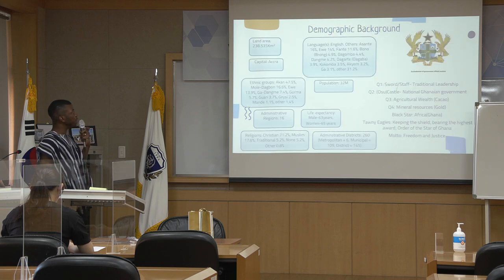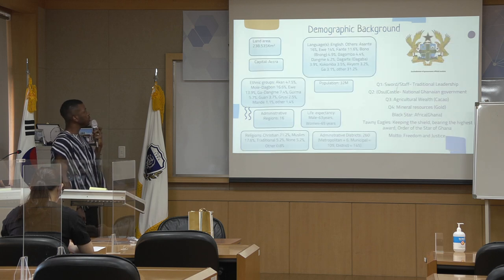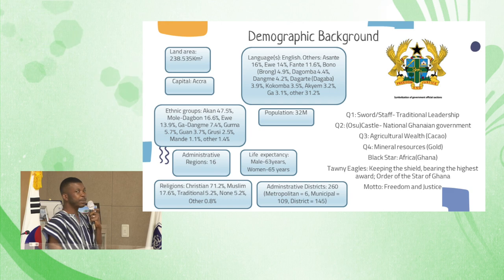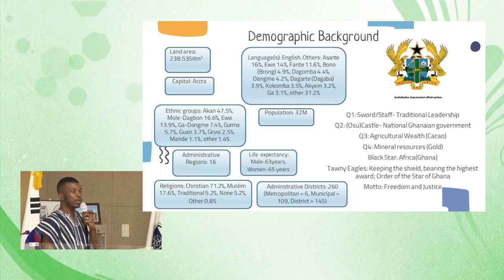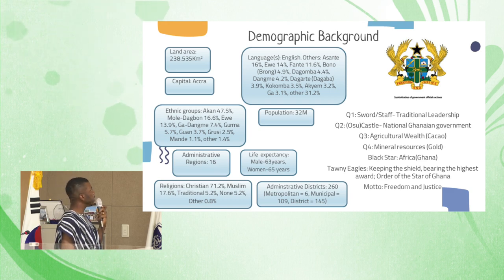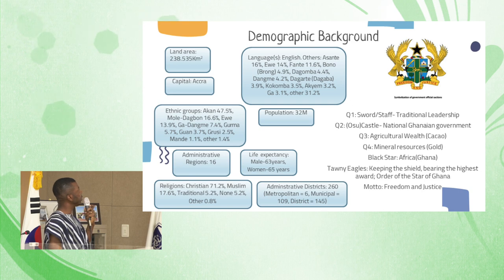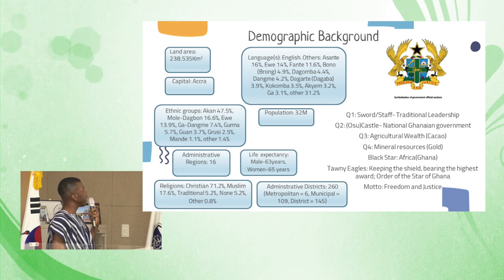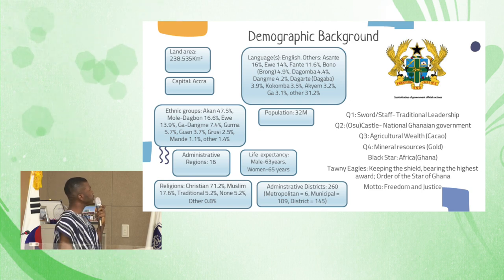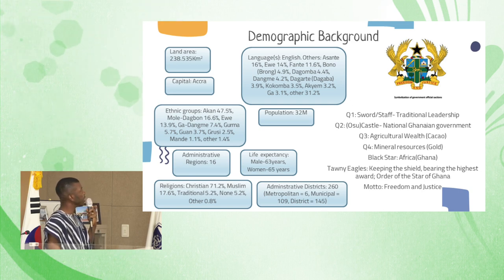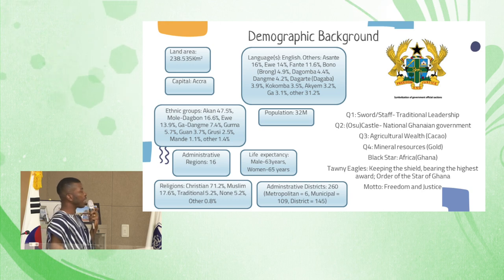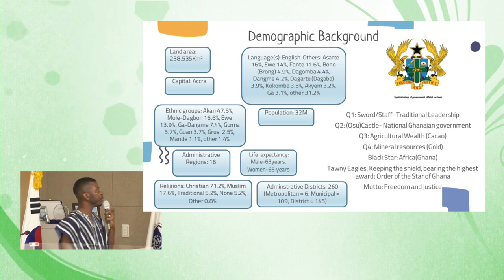Moving on to the demographic background: Ghana is covered with a land area of 238,535 square kilometers and our capital is Accra.